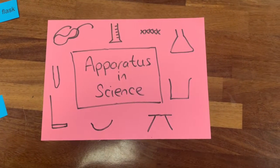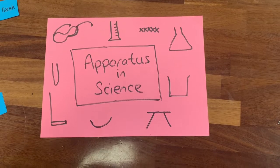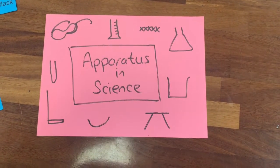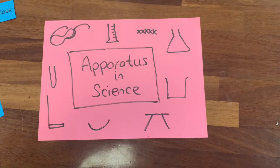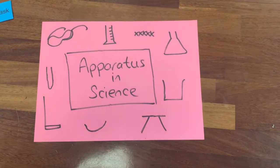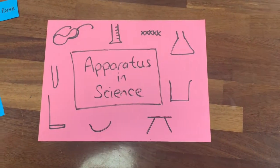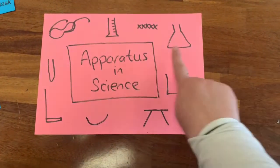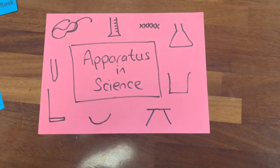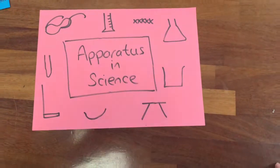Hi, so in this video we're going to have a look at some of the apparatus that we use in science. In your booklet there are 10 pieces of apparatus that we need to learn the names of and how we draw them, because whenever we're drawing diagrams it's not always possible to draw them what they actually look like. We use diagrams in science that everybody knows to recognize.